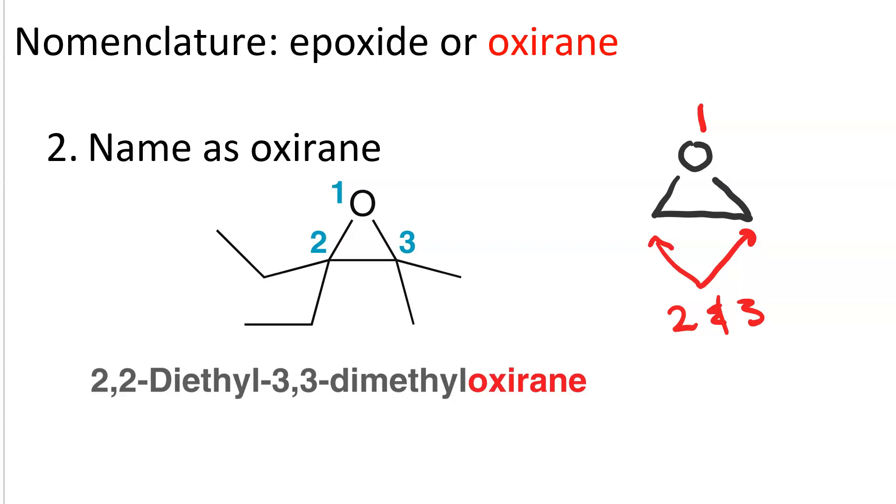And so we do the tiebreaker to make it so that the ethyl groups are on carbon-2 and the methyl groups are on carbon-3 because E comes before M in the alphabet.